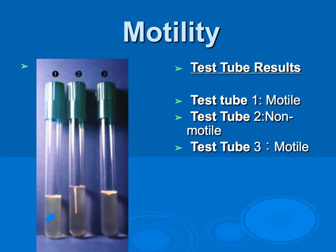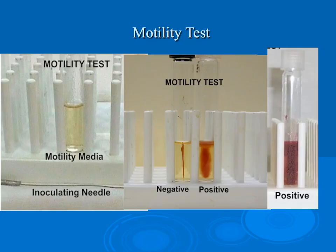So we have positive for motility, negative for motility, and positive for motility. Here we have just a couple more motility tests to look at. You can see a negative — just where the needle has stabbed the agar — and here we can see how the bacteria has grown out from the stab.